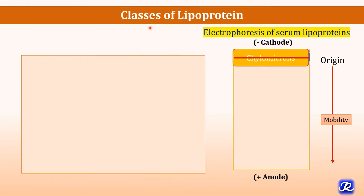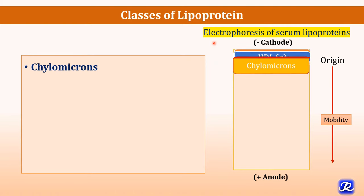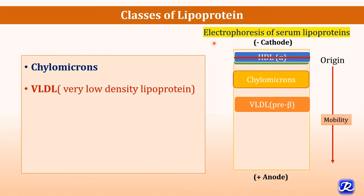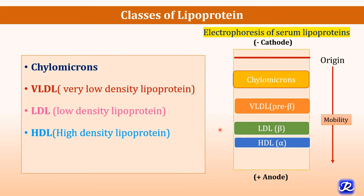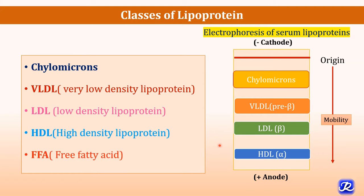What are the different classes of lipoproteins? Based on electrophoresis of serum lipoproteins, they are classified as: first, chylomicrons; second, VLDL (very low density lipoprotein), also called pre-beta lipoprotein; third, LDL (low density lipoprotein), also called beta lipoprotein; and fourth, HDL (high density lipoprotein), also called alpha lipoprotein. Free fatty acids are also considered a class but cannot be separated by electrophoresis. So the four major classes are chylomicrons, VLDL, LDL, and HDL.